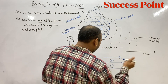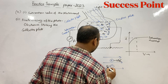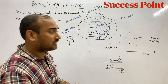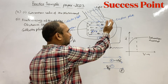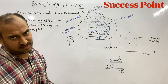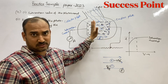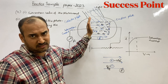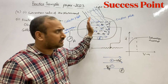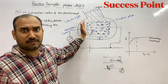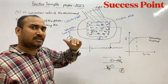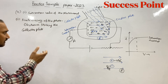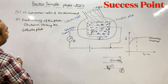Negative charge पर force हमेशा opposite to the direction of field लगता है, और यह force QE होता है। तो सारे electrons पर force लगेगा opposite to the direction of field — मतलब collector की तरफ। लेकिन saturation current की situation में जितने electrons निकल रहे थे वो सारे पहले से ही पहुँच रहे थे। Number of electrons नहीं बढ़ेंगे, इसलिए saturation current न बढ़ेगी न घटेगी। Saturation current पर कोई effect नहीं पड़ेगा।